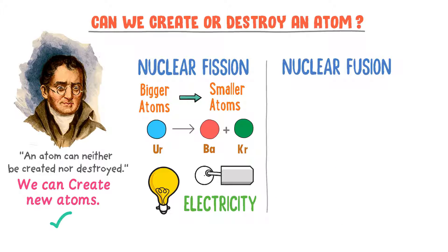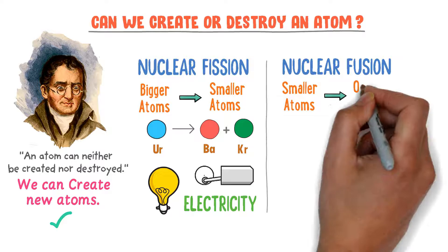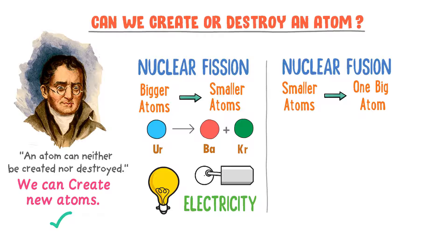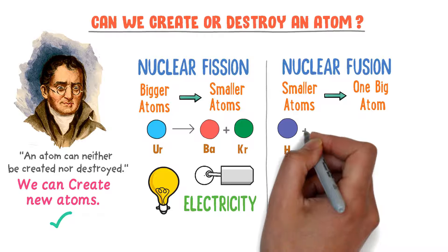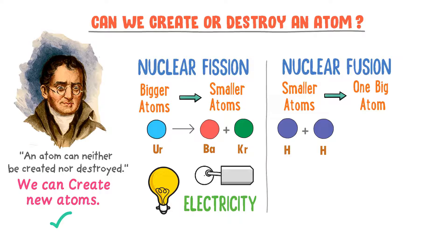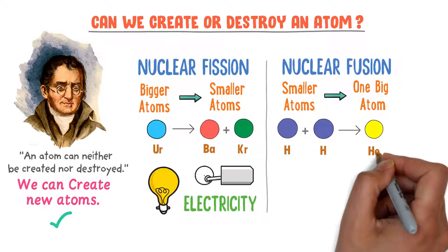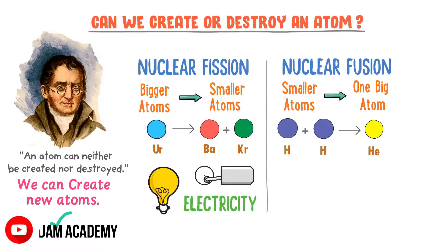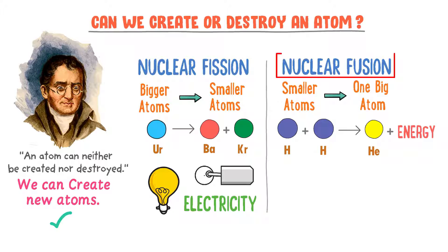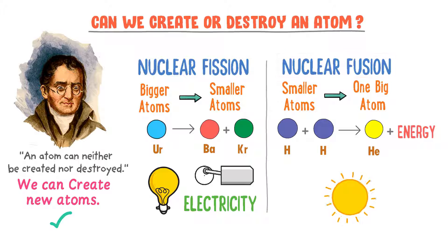Secondly, in a nuclear fusion reaction, smaller nuclei or smaller atoms come together to form larger nuclei or one big atom. For example, two hydrogen nuclei or atoms are converted to one helium nucleus or one helium atom, plus a huge amount of energy is produced. Nuclear fusion reaction takes place in big stars like the sun. This is the second method of creating new atoms from smaller atoms.